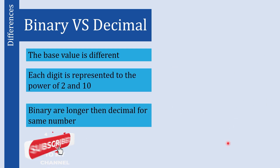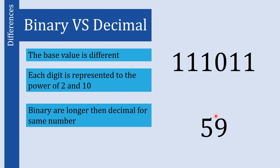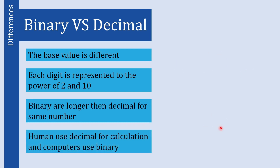Another difference is that binary numbers are longer than their decimal equivalents. For example, the decimal number 59 requires only two digits, whereas its binary equivalent — 111011 — requires six digits to represent the same value.